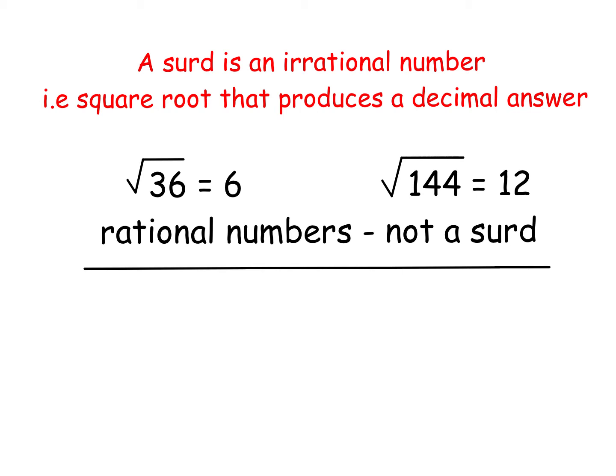Now we should recognize square roots before, and I've given you two examples here which have exact answers. So square root of 36 is exactly 6, square root of 144 is exactly 12. These provide rational answers, whole number answers. So these are not surds.